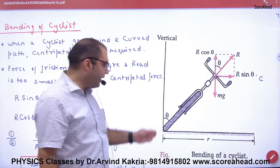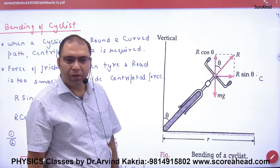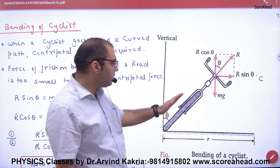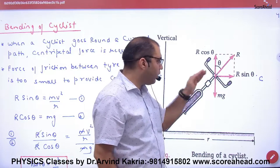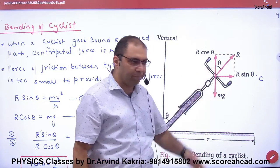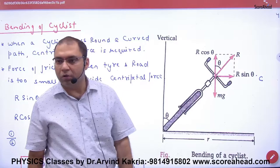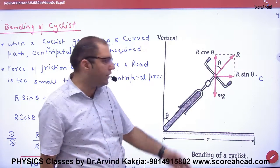Suppose there is a vertical line — this represents the cycle and its handle. Now, the forces: which forces are acting? The weight acts downward.